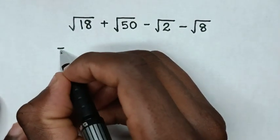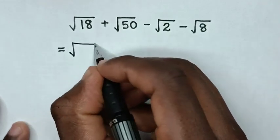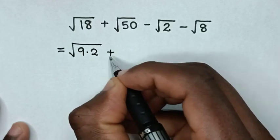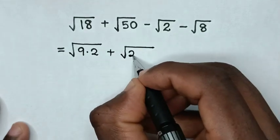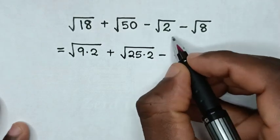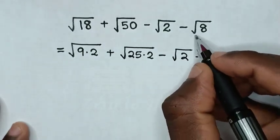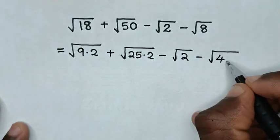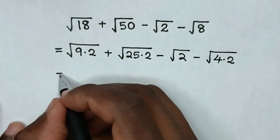it will be equal to: square root of 18 is the same as square root of 9 times 2, then plus square root of 50 is the same as square root of 25 times 2, then minus square root of 2, then minus square root of 8 is the same as square root of 4 times 2.